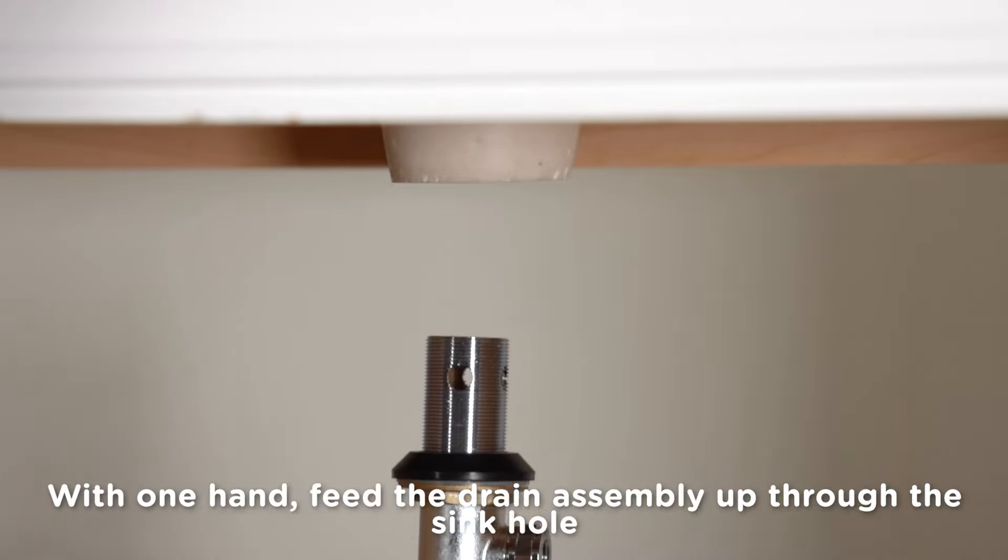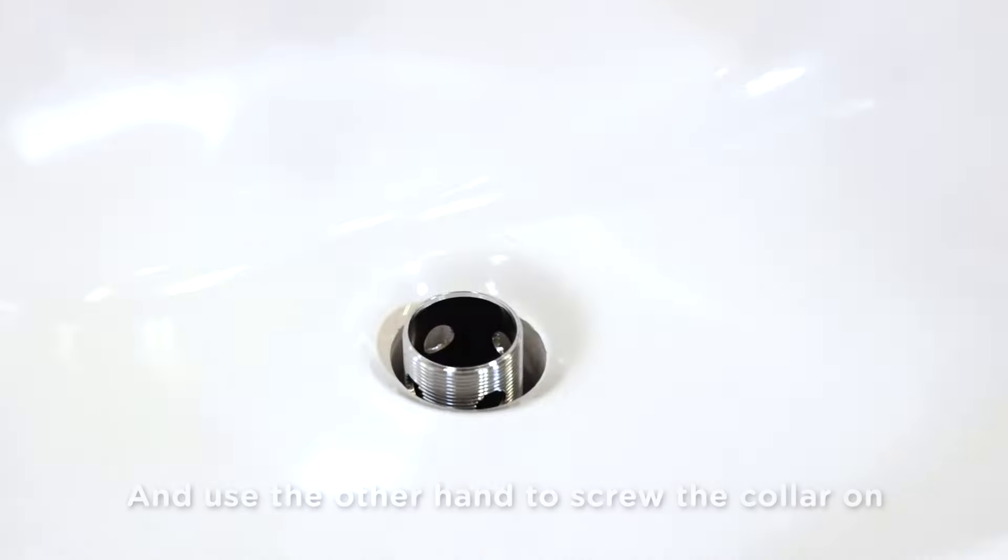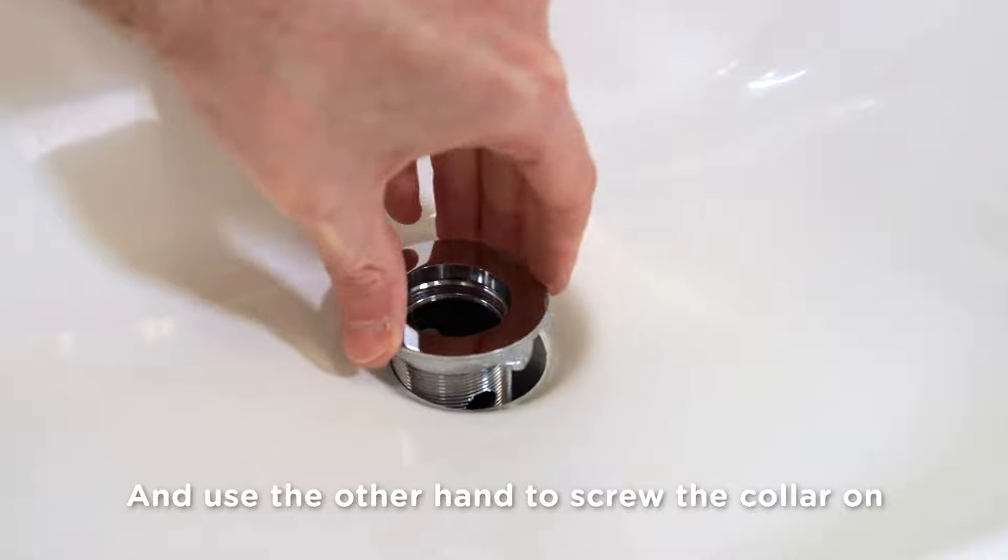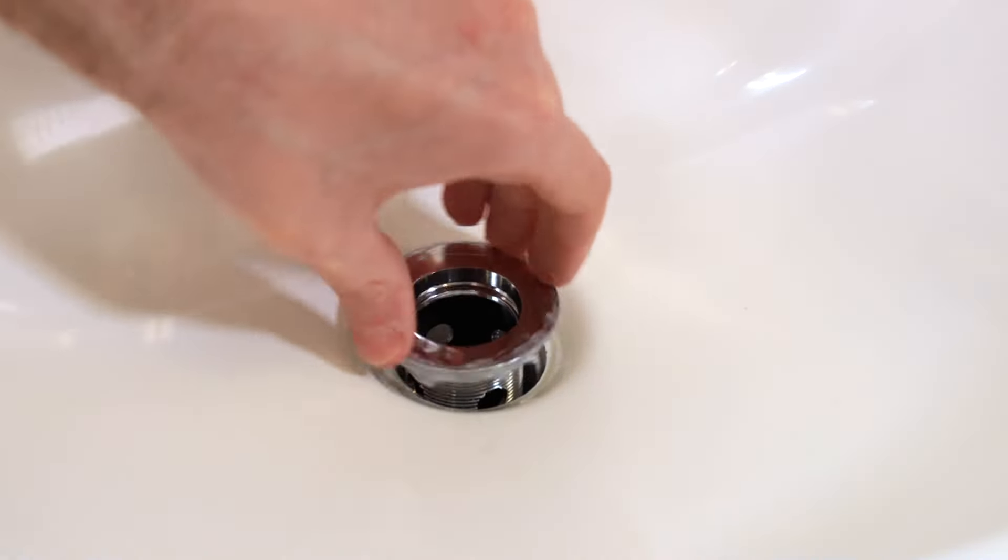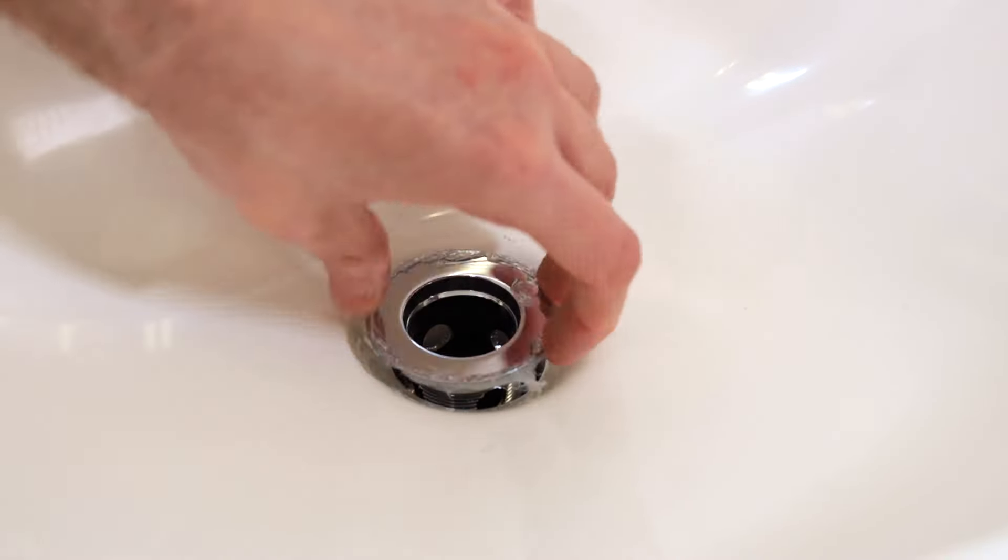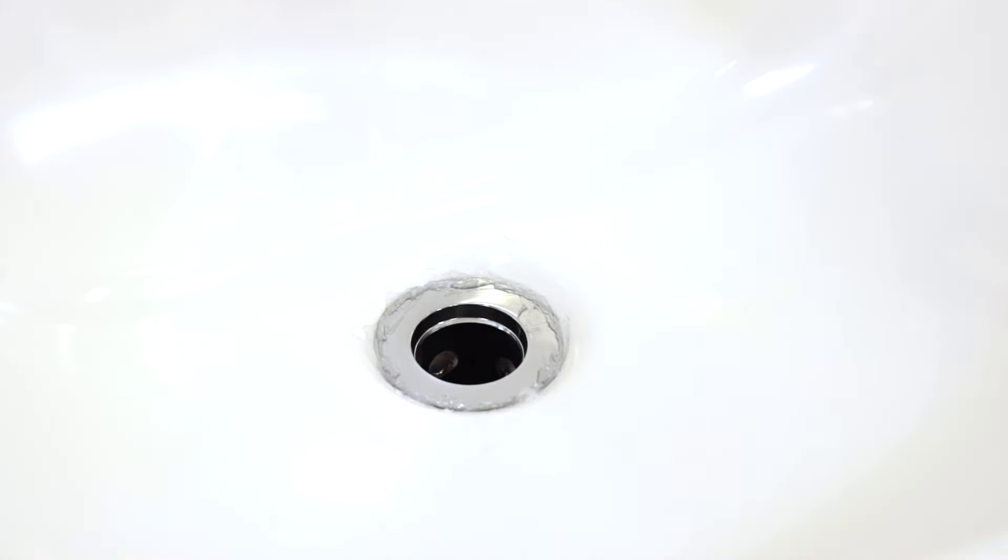Now, with one hand free, feed the drain assembly up through the sink hole and use the other hand to screw the collar on. Same method here, just as tight as you can get it with your bare hands. No tools. Once the collar is on tight, let it settle down into the outlet of the sink and keep it as straight as possible.